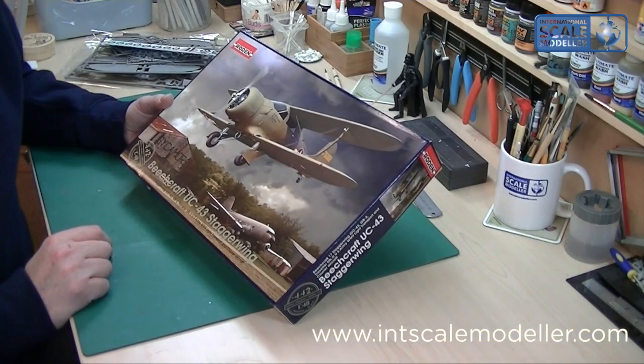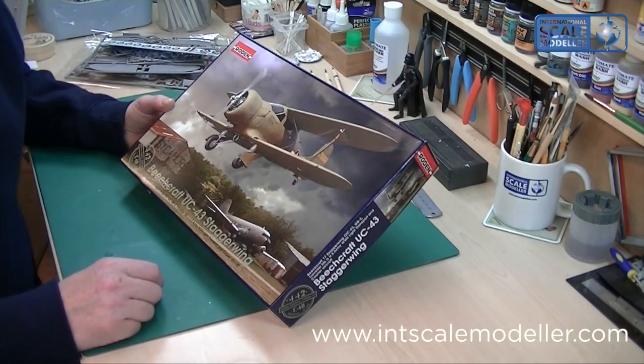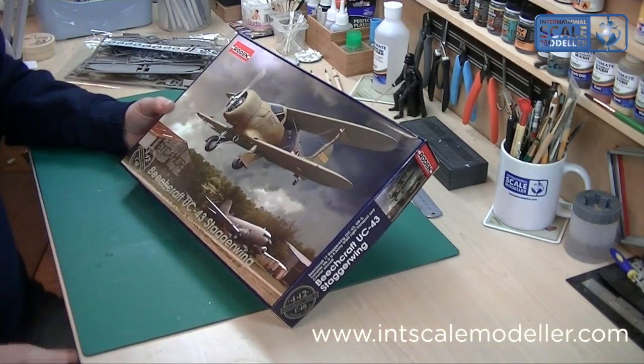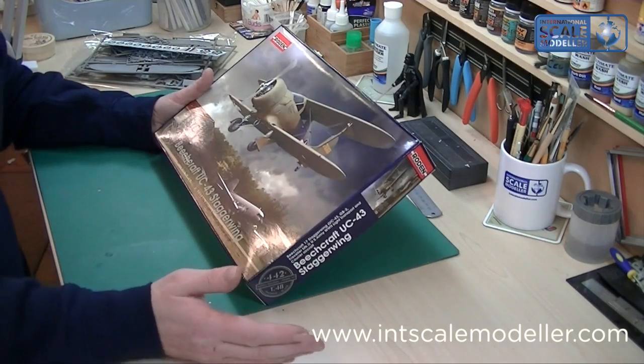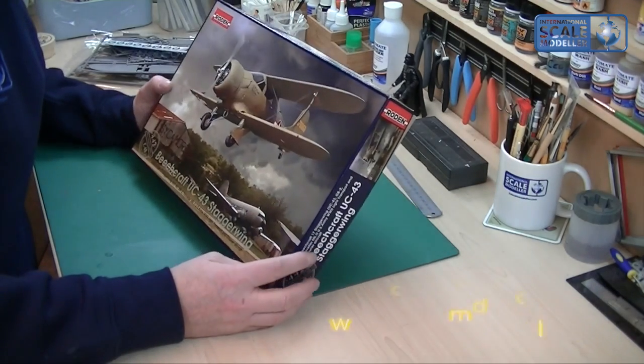It's a lovely aircraft and lovely subject. I think it's just going to need a little bit of TLC to get it looking really, really nice. But once you do, it's going to be a cracker to have on your display cabinet or on your shelf. I really like that and I'm really tempted to get it just to have it as a project. I love this color as well. But anyway, so that's the Roden Beechcraft UC-43 Staggerwing in 1:48 scale. Until next time, thank you very much, take care, happy modeling.